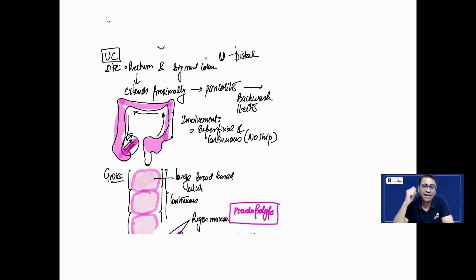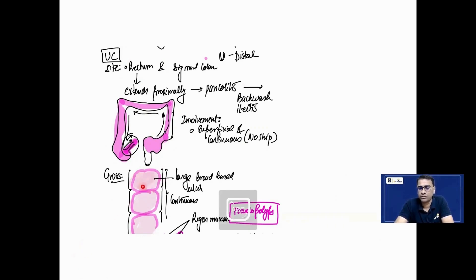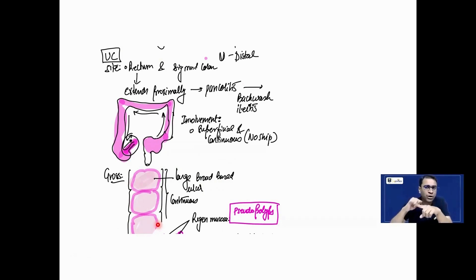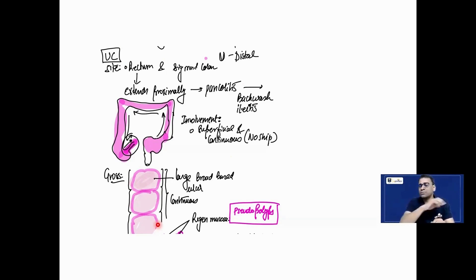Backwash ileitis is more commonly seen in ulcerative colitis; in Crohn's, the terminal ileum is the most commonly involved site. In the gross morphology of ulcerative colitis, you see broad-based ulcers that join together to form a continuous involvement — unlike Crohn's segmental pattern. Importantly, ulcerative colitis shows only superficial involvement and never goes deeper, meaning the muscle layer and serosal layer are spared. There are no fissures, fistulas, perforations, or strictures. Any superficial continuous involvement, especially of the rectum and sigmoid colon, should point toward ulcerative colitis. When the mucosal surface is breached, some regenerating mucosa grows upward, forming what is called a pseudopolyp.